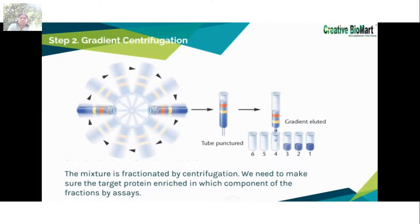After cell disruption, the mixture is fractionated by centrifugation. Trials or previous experience are needed to determine in which fraction the target protein is enriched. Differential centrifugation yields a dense pellet of heavy material at the bottom of the centrifuge tube and a lighter supernatant above. The supernatant is again centrifuged at greater force to yield yet another pellet and supernatant, giving several fractions of decreasing density, each still containing hundreds of different proteins, which are subsequently assayed for further purification.